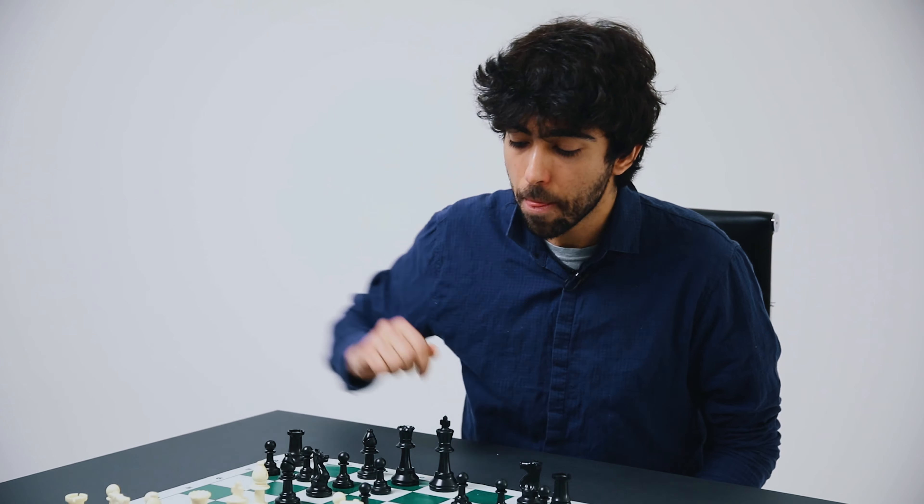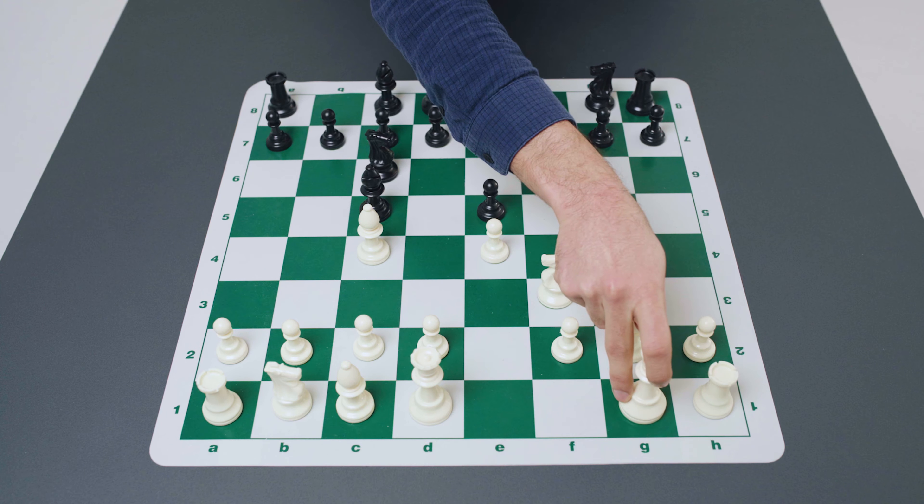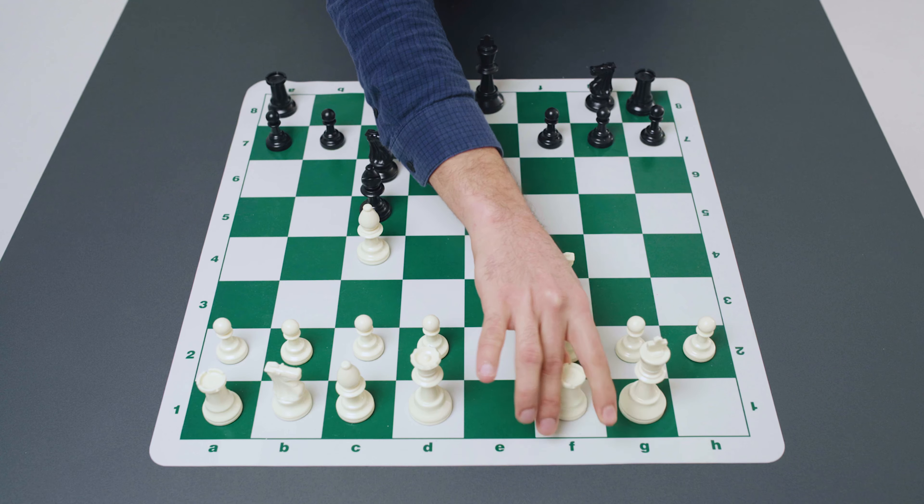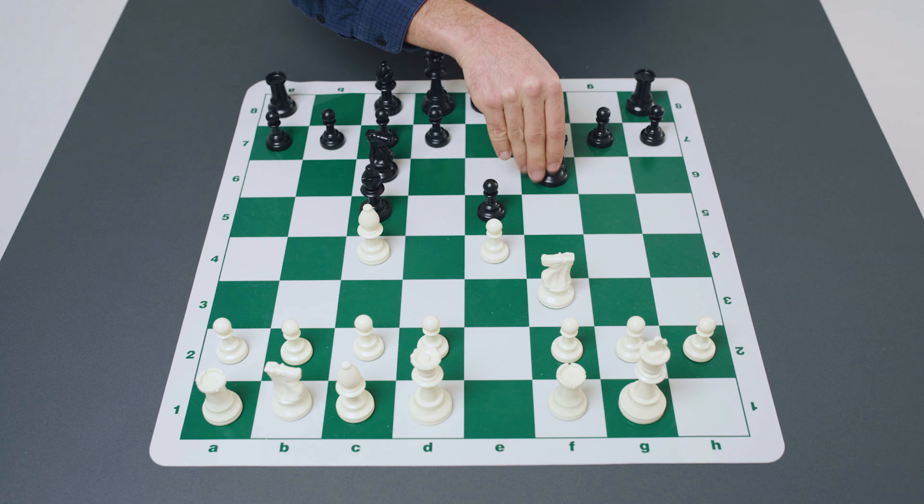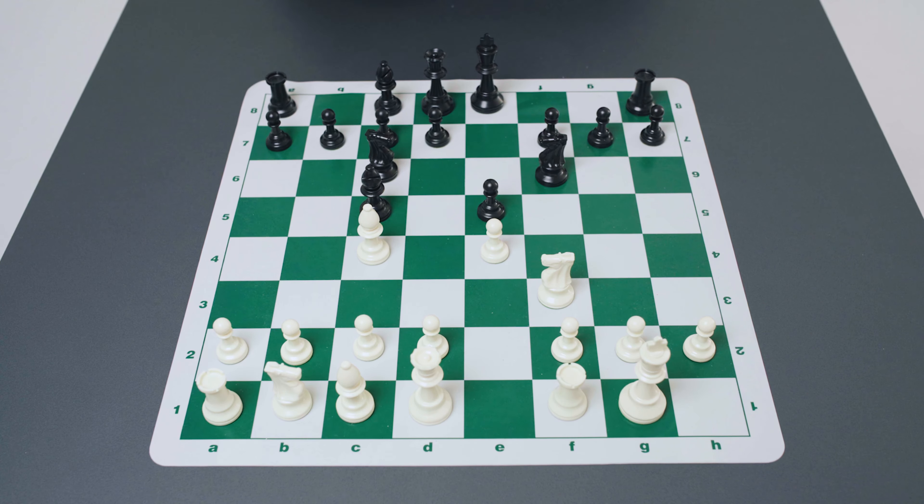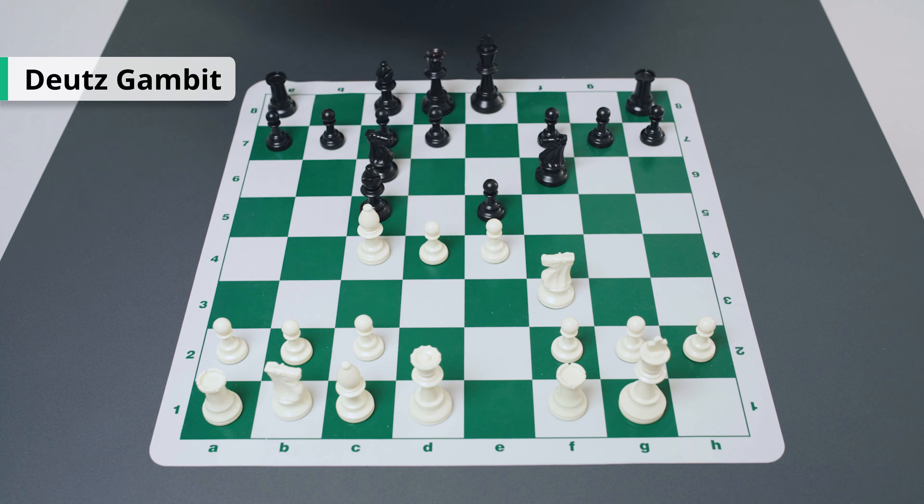If on the other hand black captures with the bishop then the bishop is no longer on the long g1 to a7 diagonal and importantly white is able to play the move pawn to c3 striking at the bishop forcing black to spend more time and then follow it up with the move pawn to d4 later on for quick central play and potentially some great attacking options.